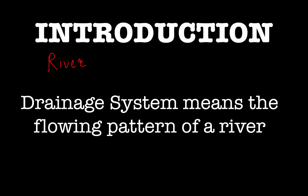A river originates from a hilltop or a glacier. The river is flowing down from this hill, goes into the plains, and ultimately merges into a water body which may be an ocean or a sea. This pattern — how that river is flowing — is known as a drainage system.